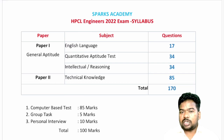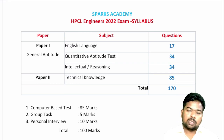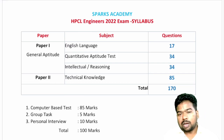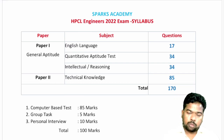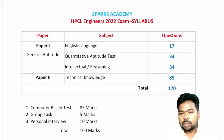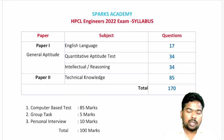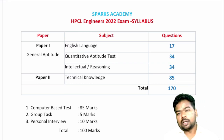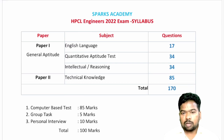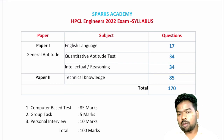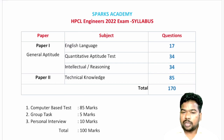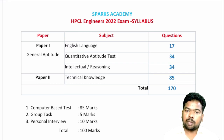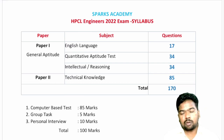One year of 16 lakh CTC is a great job, and you can use this for engineering. You can apply from 20 years of age. For OBC, there is a 3-year age relaxation, and for SC/ST, there is a 5-year age relaxation. You can apply for this exam through a computer-based test, group tasks, and a personal interview.